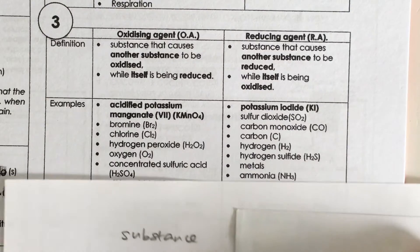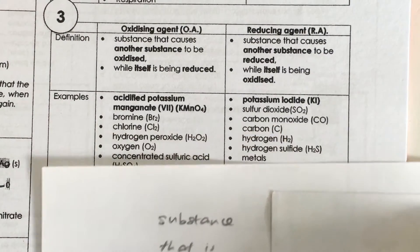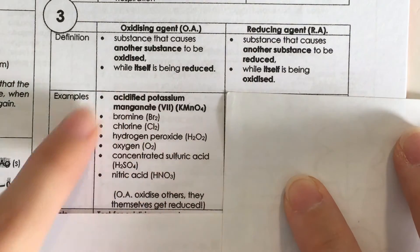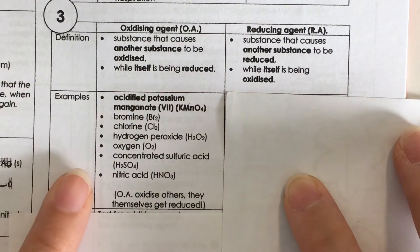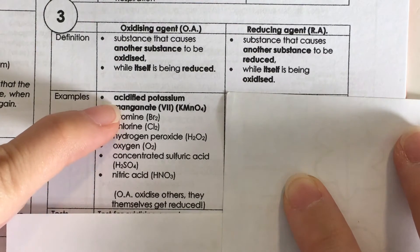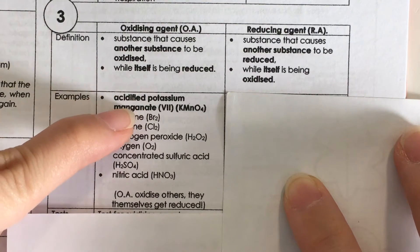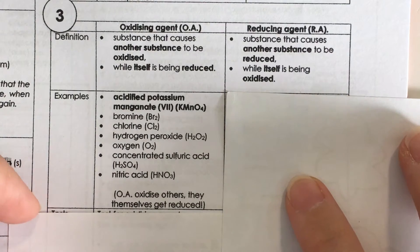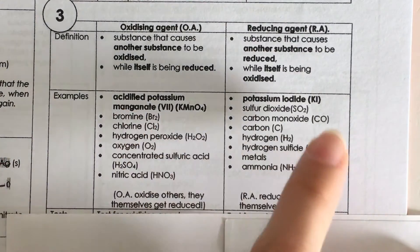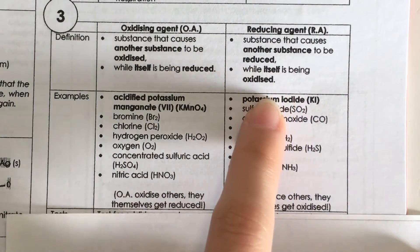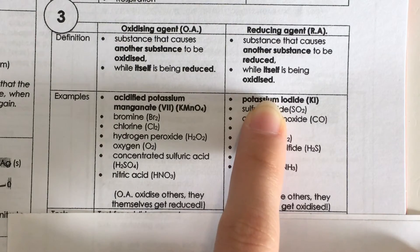Let's look at some examples. These here are examples of oxidizing agents — the most common one being potassium permanganate. On the other side, these are substances that are reducing agents — the common one being potassium iodide.